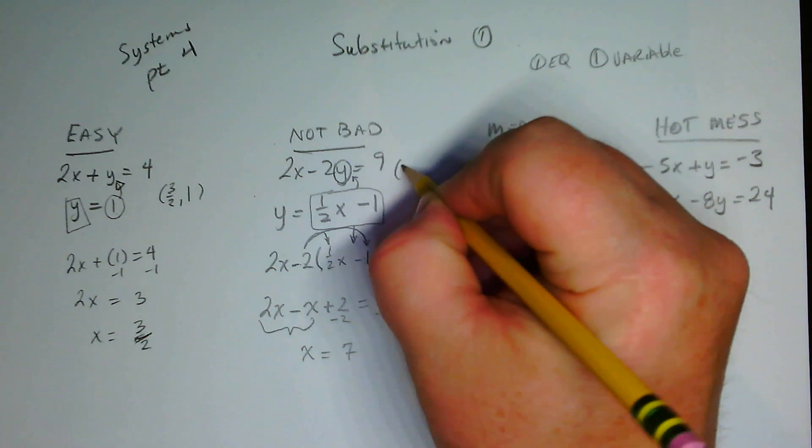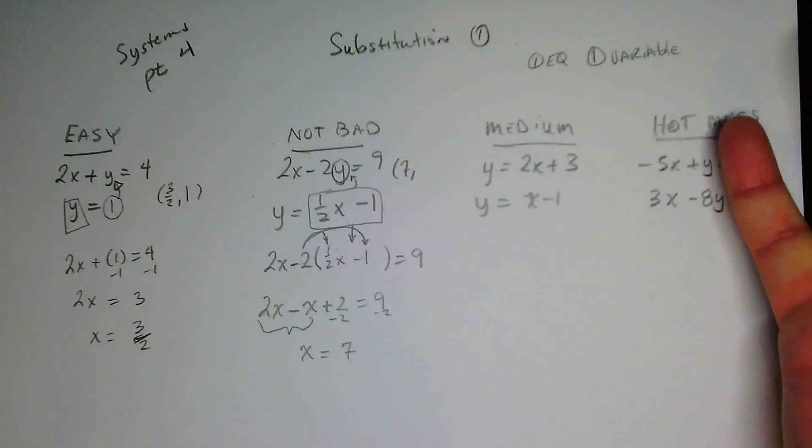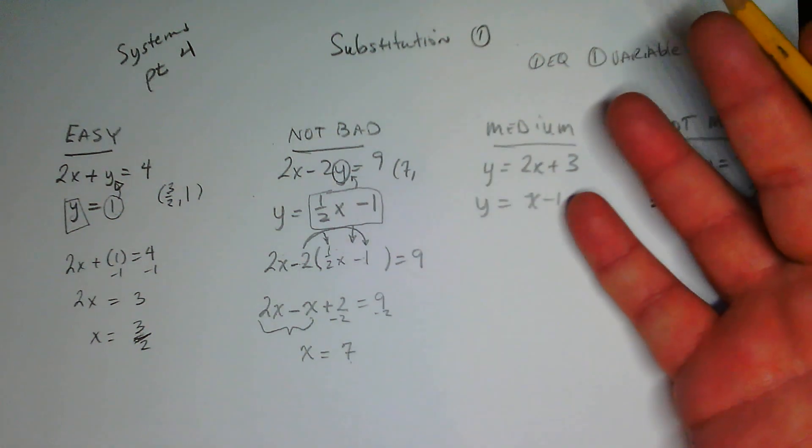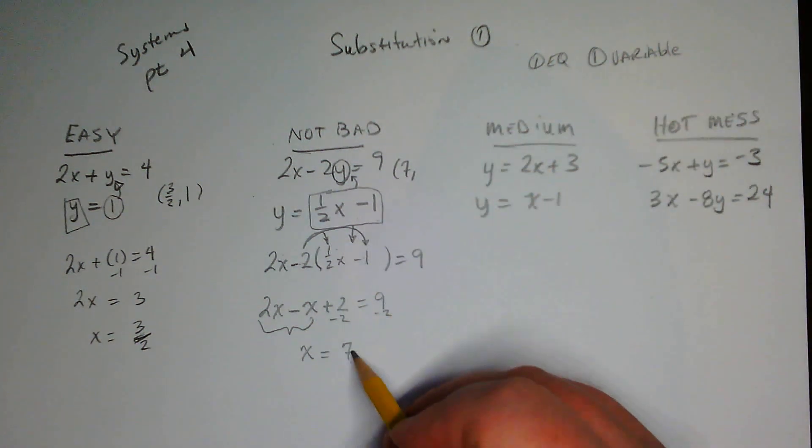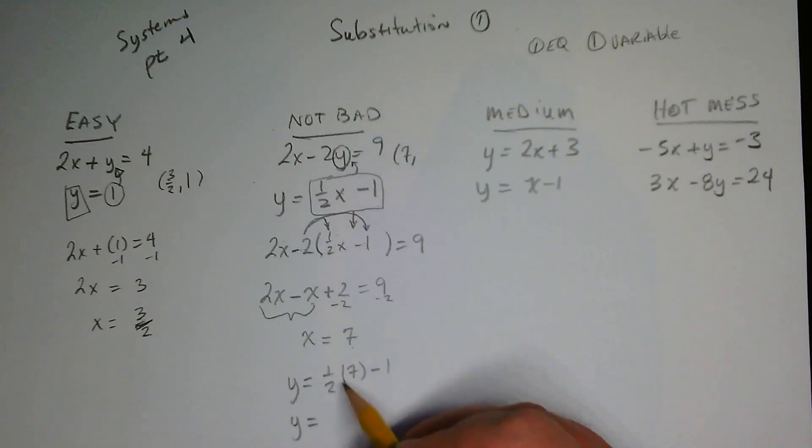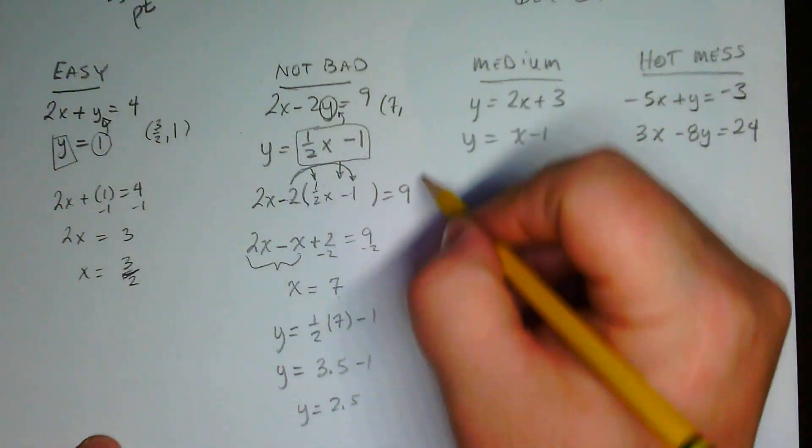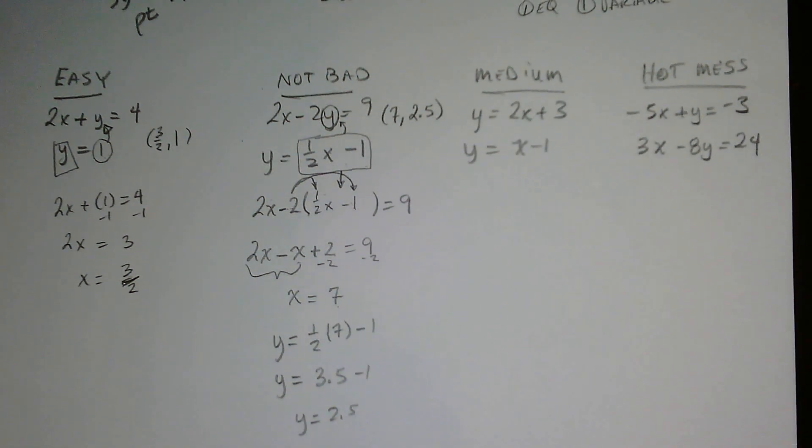So we have half of our answer now. Now we just have to take that number, plug it back into either one, whichever one looks easier, and solve it. We could plug that in here, we could plug it in there, doesn't really matter. I'm going to take it, I'm going to plug it in right here. I'm going to go y equals one half times seven minus one. Well, I could actually do this right here. Half of seven - isn't half of seven three point five minus one? So two point five. So y is equal to two point five. We could use a fraction, we could use a decimal right there. It doesn't really matter. It's working out just fine.